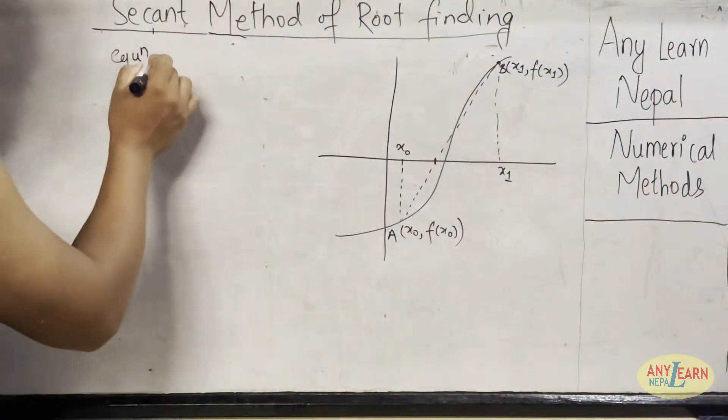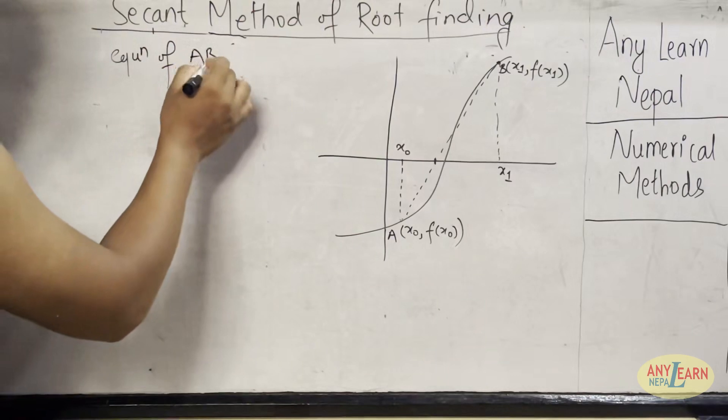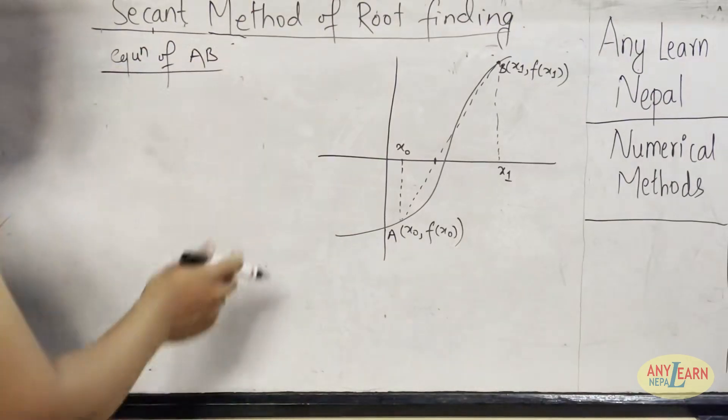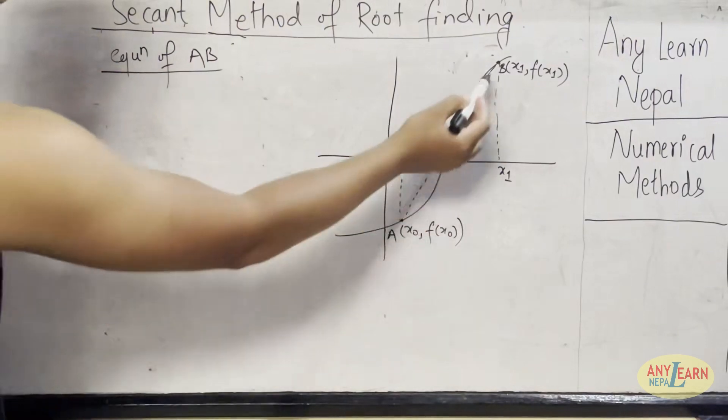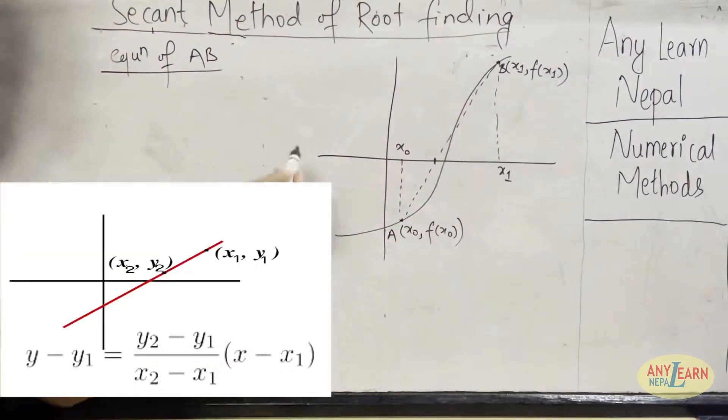So equation of AB. We know to find the equation of a line we need any two points, and two points are given here, A and B. So using the two-point formula, we can calculate the equation of that line.